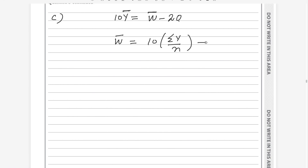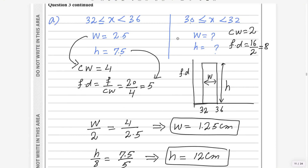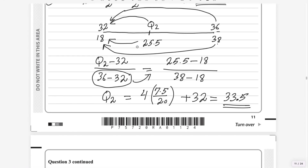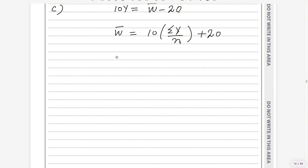The sum of y and n values are given. Sum of y is 104 and n is 50. So w-bar equals 10 times (104 divided by 50) plus 20. Using a calculator, you get the answer 40.8, as required.